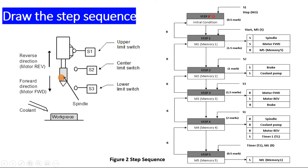When the machine arrives at step 3, which is the lower limit switch S3, it will reset the motor forward, set the motor reverse, and reset the brake — because it is going to move up at high speed. In step 4, when the drill comes back to its initial condition, you reset the spindle, stop the coolant pump, stop the reverse motor, and start timer 1 for the 1-minute delay. After that, you need to come back to step 1, so you add one more memory which will reset the overall step and come back to step 1 again.